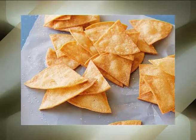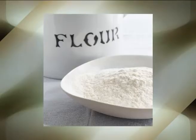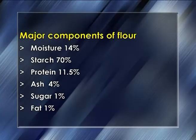Flour is a major ingredient of bread and is obtained through the milling process, in which the bran and germ part of the wheat grains are removed as far as possible to get flour of desirable composition. The major components of flour are: moisture 14%, starch 70%, protein 11.5%, ash 4%, sugar 1%, and fat 1%. The flour should have color, strength, tolerance, high absorption, and uniformity for the production of quality bread.